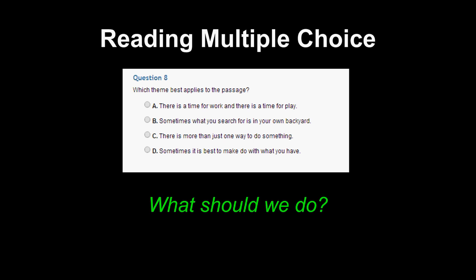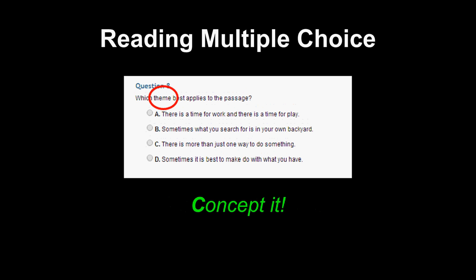The next question — which theme best applies to the passage — calls us to use the strategy of concepting. The concept strategy means that we understand a literary concept is at play in the question. In this case, the literary concept is theme. Theme refers to the main abstract idea of a piece of literature — some students understand it as the lesson learned. It is the insight into human nature that the story provides, developed by specific details like character traits, plot events, and conflicts. Knowing that, I would look back into the text to see what the plot events develop and answer more clearly.